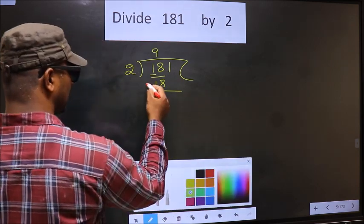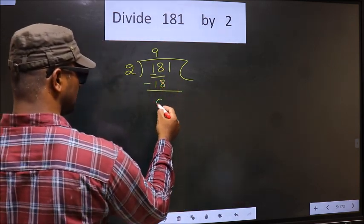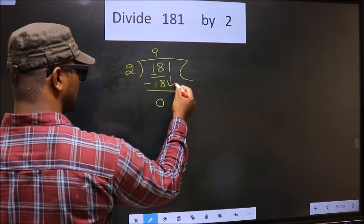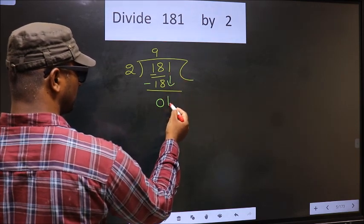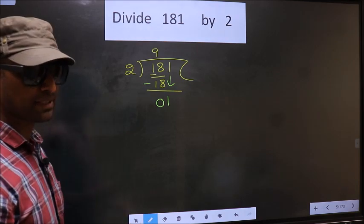Now we subtract. 18 minus 18, 0. Now we bring the beside number down, that is 1. Now here is where the mistake happens.